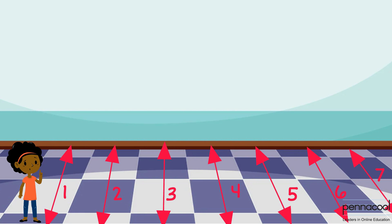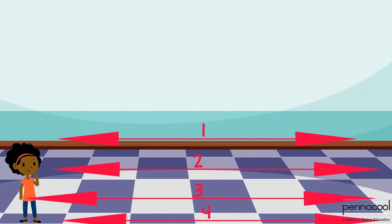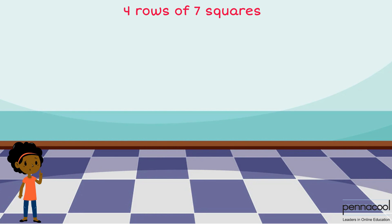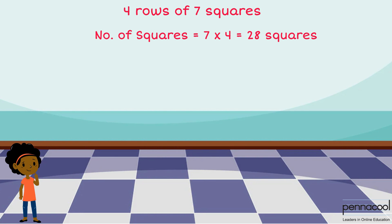Jessica counts 7 columns and 4 rows. This tells us that we have 4 rows of 7 squares, which is 7 multiplied by 4, which is equal to 28 squares.